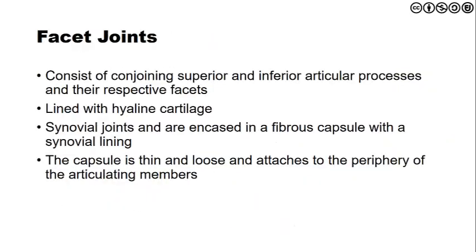For the facet joints, these consist of the superior and inferior articular processes and their respective facets. The facet joints are angulated at approximately 60 degrees. The facets are lined with hyaline cartilage; they are synovial joints with a fibrous capsule and synovial lining. The capsule attaches to the periphery of the articulating members. Additionally, each capsule has neurologic innervation and can transmit information related to proprioception and position sense.